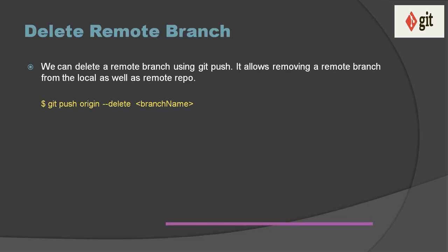The next use case of git push is when you would like to delete a branch from remote. We can delete a branch using git push — it allows removing a remote branch from local as well as the remote repository. For that, the command is git push origin --delete or -d, followed by the branch name. This will delete your branch from both the local and remote repository.